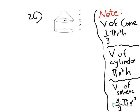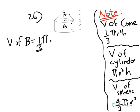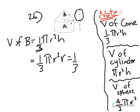In question 26, they've given us a solid made of a cylinder, which we'll call A, and a cone, B. They're asking you to show that the total volume equals that of a sphere of radius R. The volume of cone B is one third pi r squared h. The radius is R and the height is also R, so it becomes one third pi R cubed.